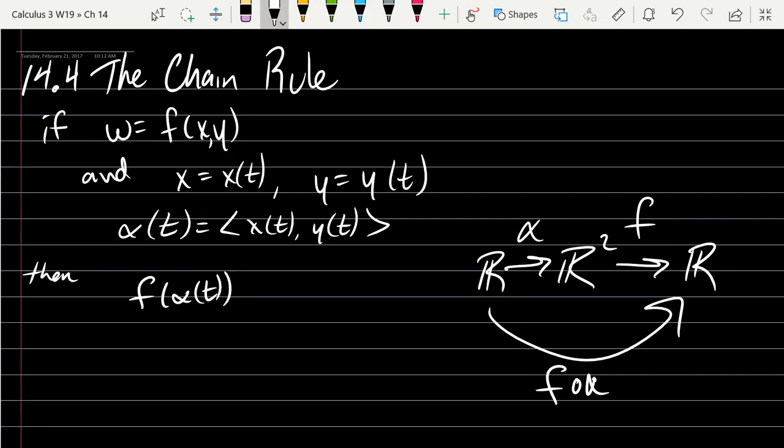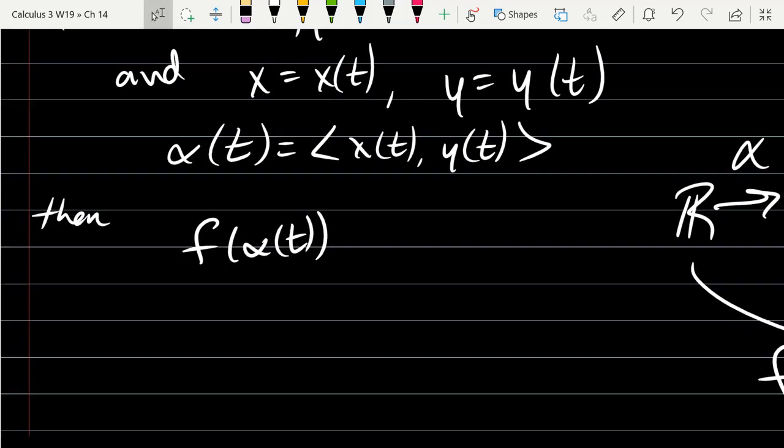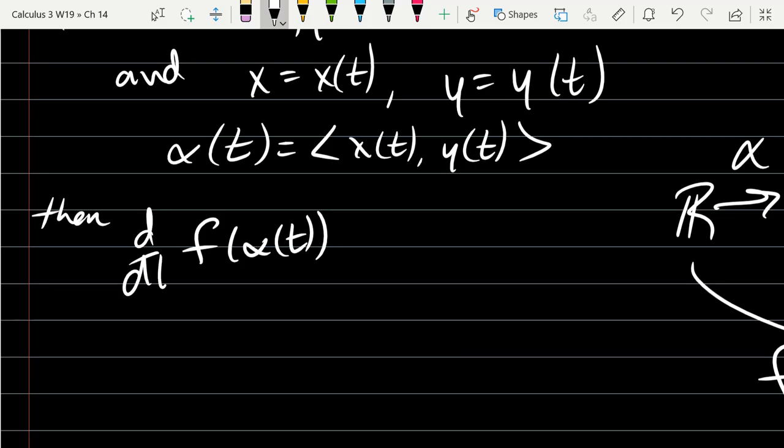What variable does it make sense to take the derivative of the f of α function? t. t is the only derivative, or the only input variable. So that means when we take this derivative, it's not partial. There's only one input variable. So it's just d/dt. It's not a partial derivative.